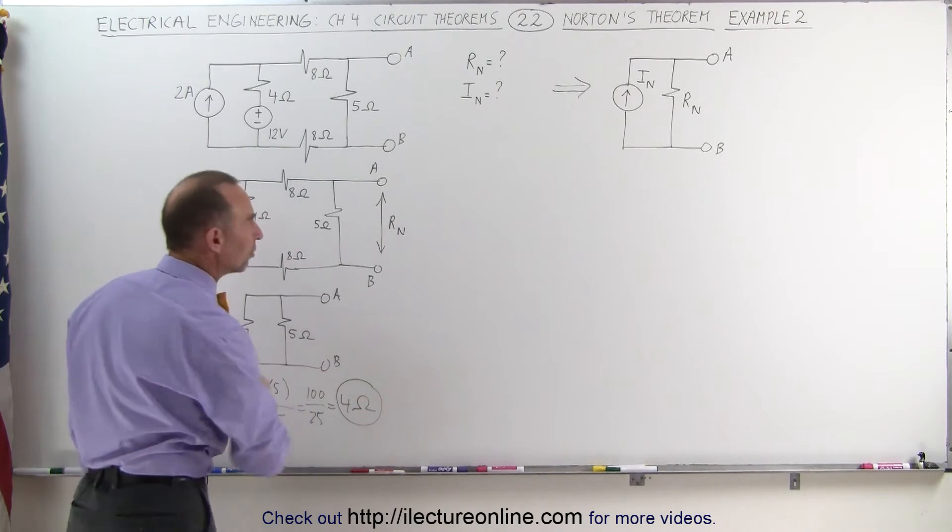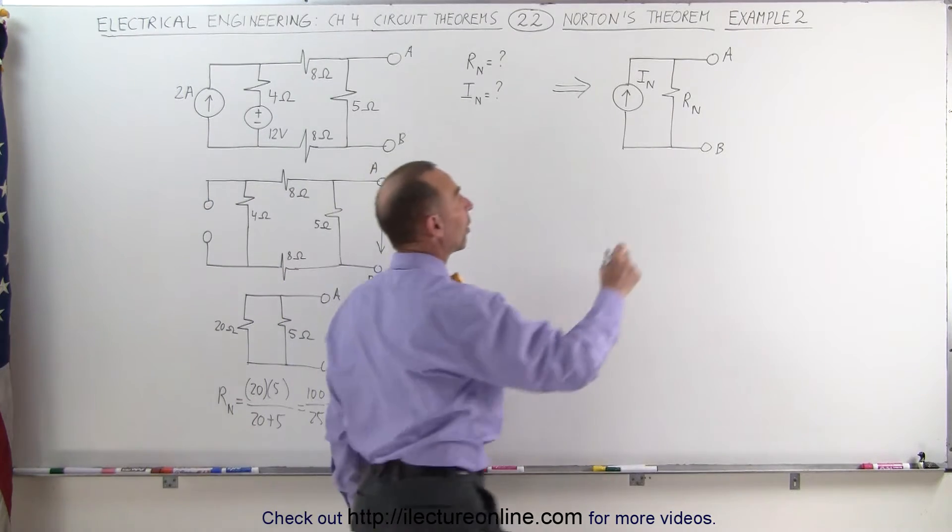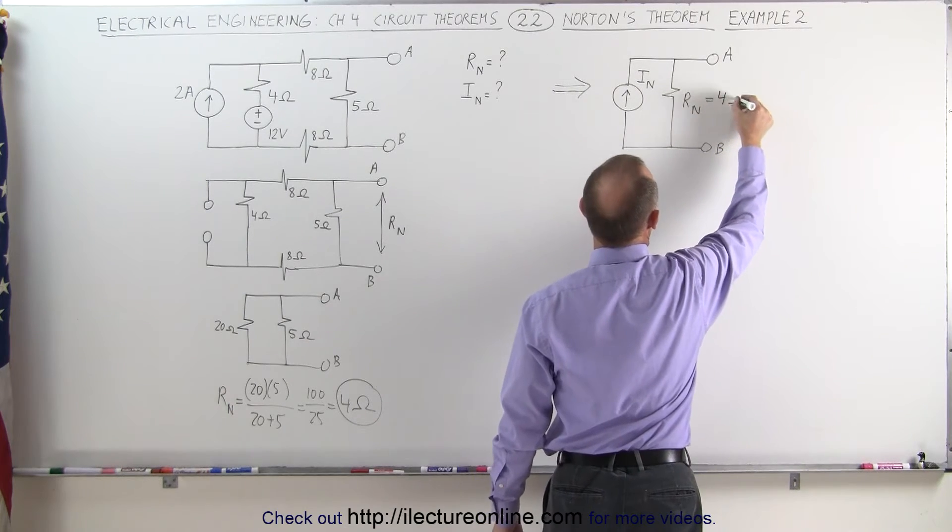That means that this is the Norton resistance. The Norton resistance of our equivalent circuit is equal to 4 ohms.